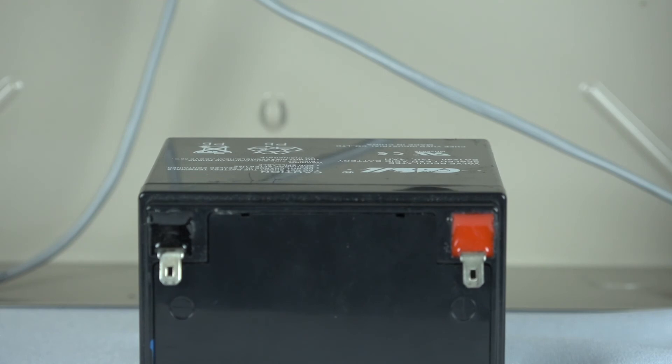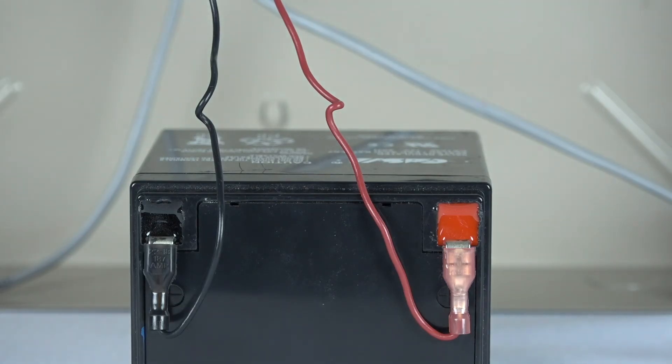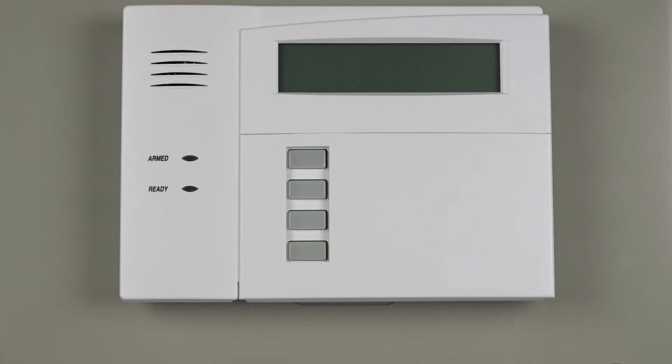You can now connect your battery. Using the wiring harness attached to the panel, the black wire will connect to the black terminal on the battery and the red wire will connect to the red terminal. Place the battery in the can and secure the locking door.